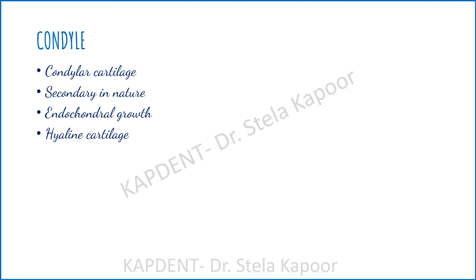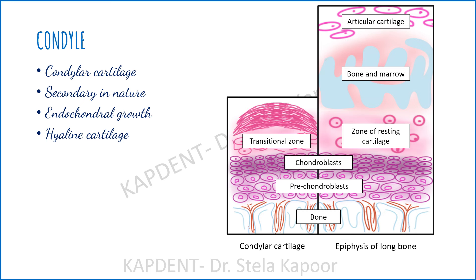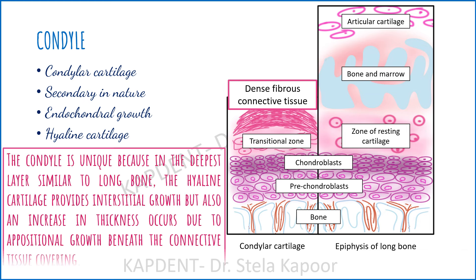Now let's talk about the condyle. The growth in the condyle of the mandible is endochondral in nature. It has been identified as a secondary cartilage in terms of its appearance and growth capacity. Since the cartilage on the condyle covers the ends of the bone where they articulate with each other, similar to a knee joint, it is a type of articular cartilage, which is hyaline in nature. The condyle of the mandible differs from articular cartilage elsewhere in the body. By the simplified histological diagram, you can see that the initial three layers — bone, prechondroblast, and chondroblast — are common. However, a unique feature not found in any other articular cartilage of the body is the presence of a dense and thick fibrous connective tissue layer. Therefore, growth in the condyle is unique because in the deepest layer, similar to a long bone, the hyaline cartilage provides interstitial growth which lengthens it. But also beneath the connective tissue covering, there occurs an increase in thickness due to appositional growth.